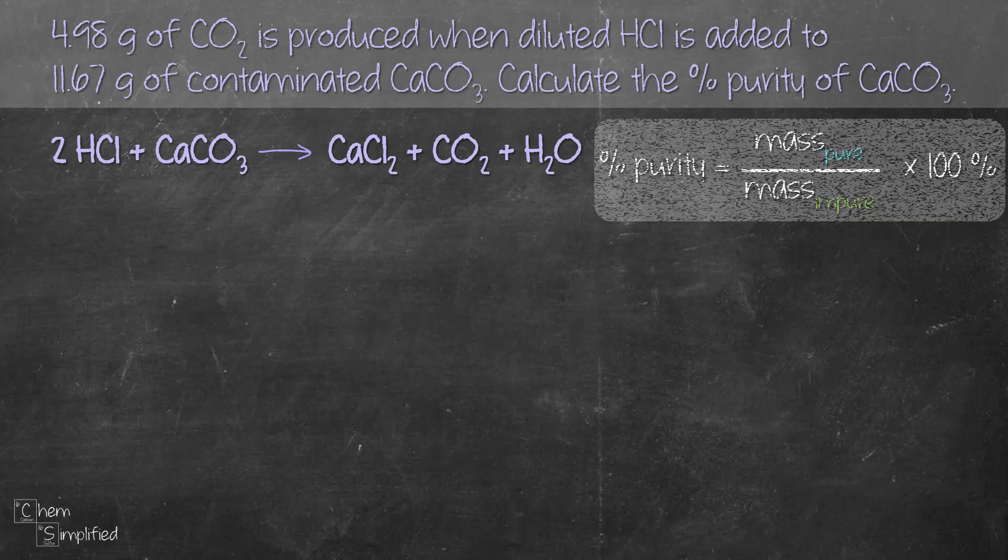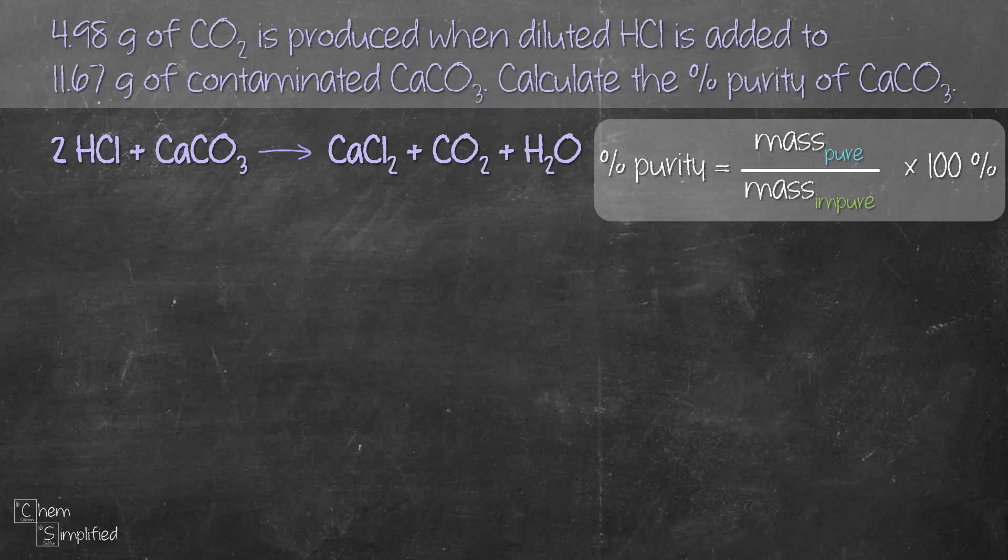Using the formula, we need to find the mass of pure sample because we already have the mass of the impure sample which is 11.67 grams. Another piece of information that we're given is 4.98 grams of CO2. From that we need to find the grams of CaCO3. That's going to be the pure mass, the mass of the pure sample.